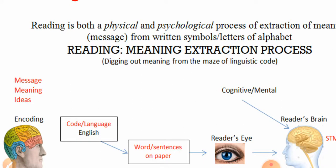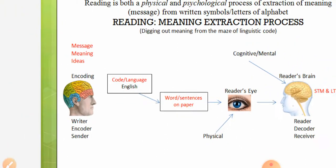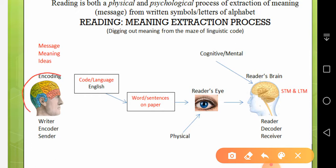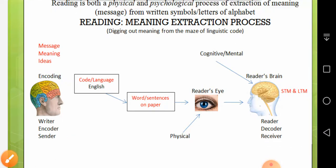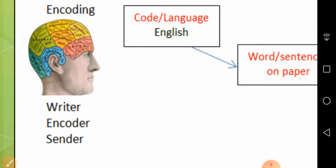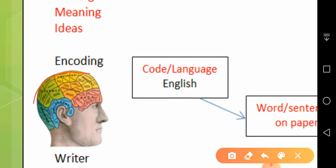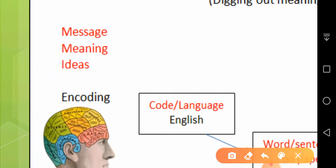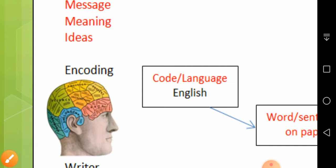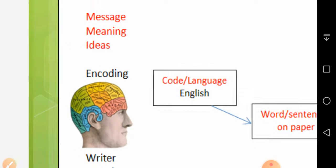Reading is the extraction of meaning from written symbols. Let's see how it happens. Here is a writer, also called the encoder and sender of the message. In the mind — the brain is something physical in nature, while the psychological part is known as the mind — in the mind of the writer there is a message, meaning, or ideas and thoughts. This writer wants to get these ideas out of his mind and across to someone else who is a reader.